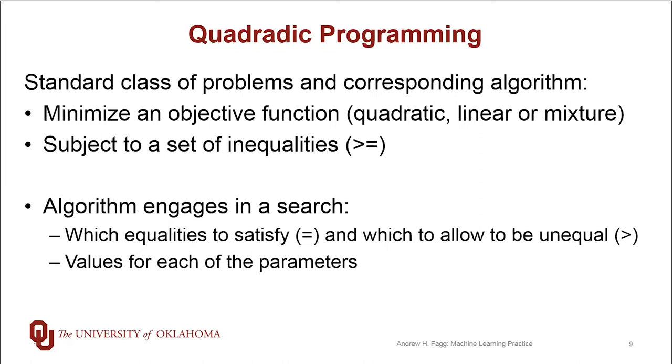The algorithm itself engages in a search where it has to decide for the constraints whether they satisfy the equality precisely, or whether they are unequal in the greater than sense. But we never allow a scenario where we have the less than sense. Within those binary choices, the algorithm then has to figure out what parameters to actually choose in order to minimize the objective function. Until finally it reaches a place where it has optimized the objective function.